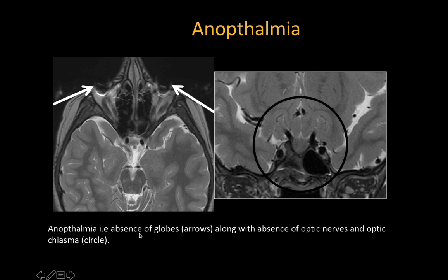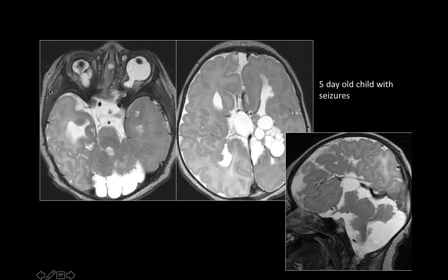This is anophthalmia — absence of the globe along with absence of the optic nerves and optic chiasm — in a five-day-old child with history of seizures. Here the globe is present but small in size, so this is microophthalmia. There is an associated defect along the posterior optic nerve head with a large retrobulbar cystic lesion — this is coloboma. The lens also appears abnormal. Intracranially, the posterior fossa is enlarged with an arachnoid cyst, and the cerebellum is small and dysplastic.